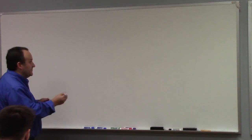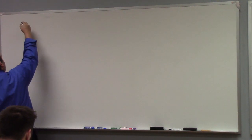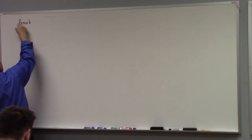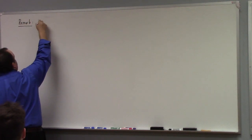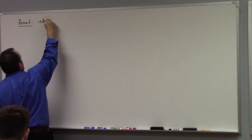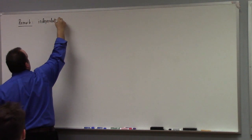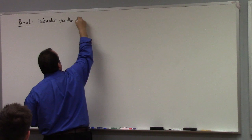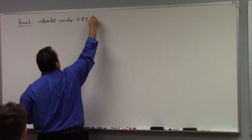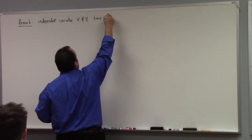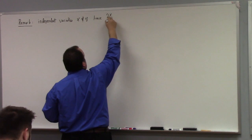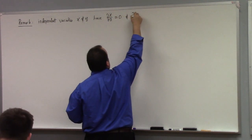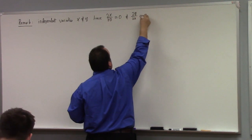Alright, let's get into some examples. Let me just make a remark before I do that. For independent variables x and y, the partial of x with respect to y equals zero.